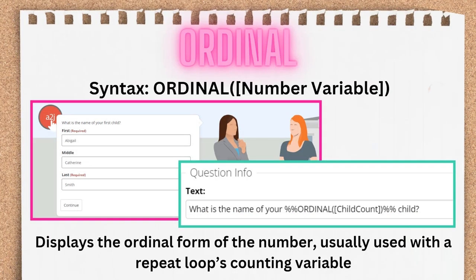The ordinal function displays the ordinal form of a number variable's value. It is generally used in a repeat loop to specify which iteration of the loop you're asking about. In this scenario, I'm using a repeat loop to gather the names and birthdates of the user's children. The first question asks for the child's name, and to be very clear about which child's name I want, I use the ordinal function with the repeat loop's counting variable — which is always a number. Each time the loop increments, that number goes up one and the user will be shown the next ordinal version: 'What is the name of your second child?', 'What is the name of your fifth child?', etc.